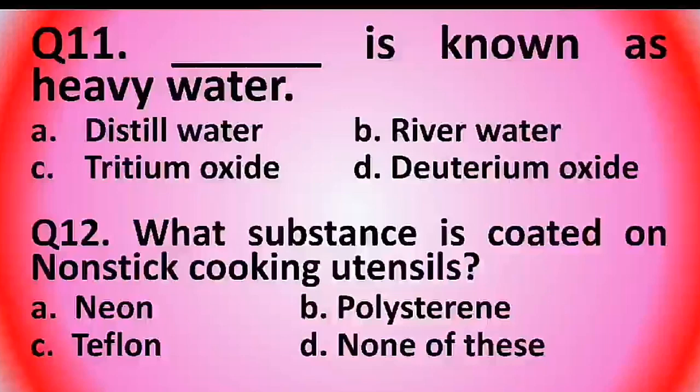Question 11: What is known as heavy water? Options are: distilled water, river water, tritium oxide, or deuterium oxide. The answer is option D: deuterium oxide.